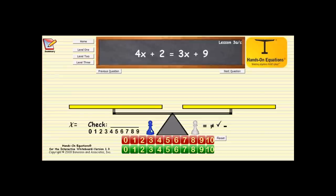Since it says four x's, let's place four blue pawns here. One, two, three, four. Those are my four x's, plus we need to put on a two, so let's place a cube with the number two.